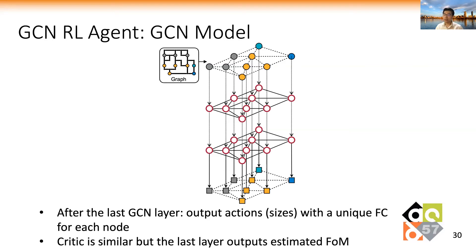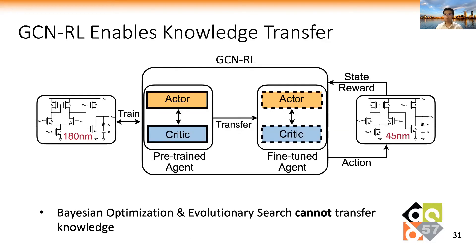The critic model is similar to the actor model, but its last layer outputs the estimated figure-of-merit values. Our GCN framework enables knowledge transfer since the knowledge of how to perform transistor sizing is stored in the weights of the agent. So we can apply the trained agent directly on other technology nodes or topologies. By contrast, Bayesian optimization and evolutionary search cannot support knowledge transfer because BO has a fixed search space, and evolutionary search keeps good samples in its population without summarizing the knowledge.